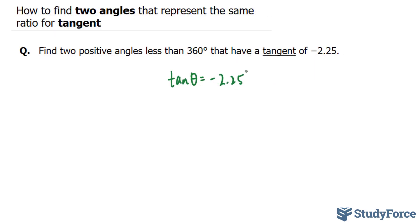To do this question effectively, we'll need to know where tangent is negative, because our ratio is negative. And we can find out using the CAST rule, which tells us that cosine is positive here, all trigonometric ratios are positive there, only sine is positive here, and only tangent is positive here.